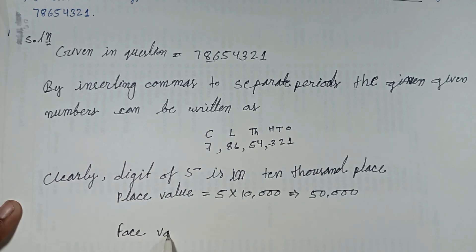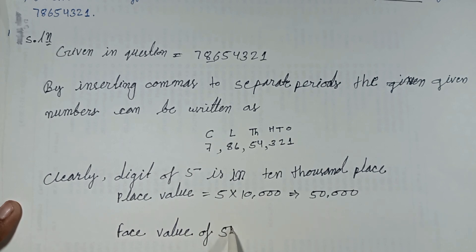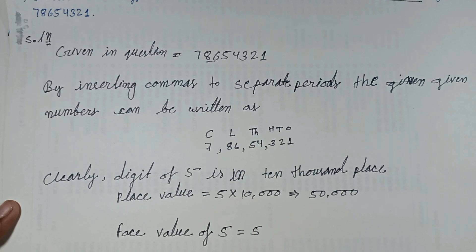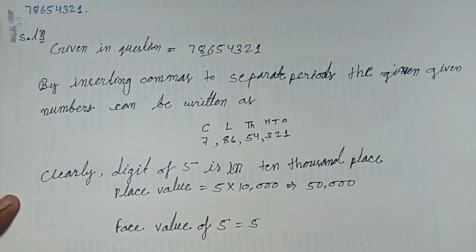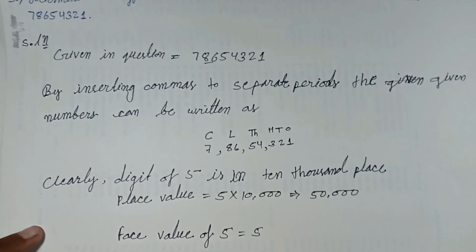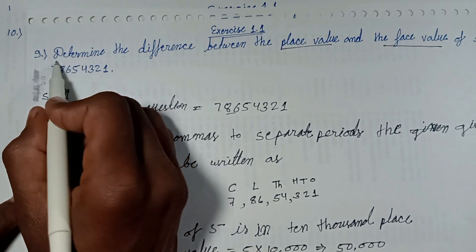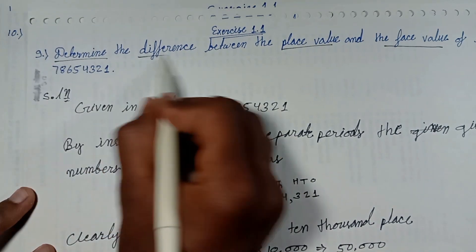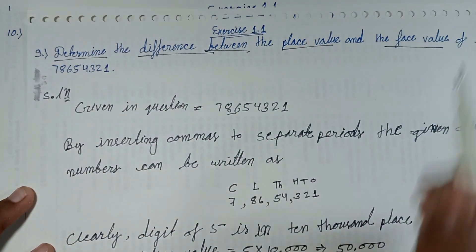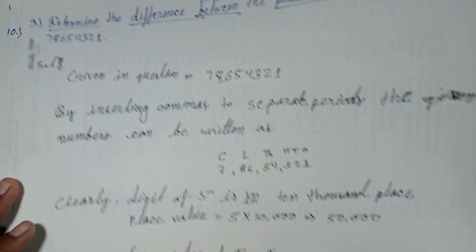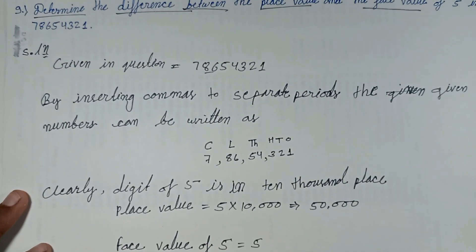The face value of 5 is 5 itself, because the face value of any digit is always the digit itself. Now let's determine the difference between the place value and face value.